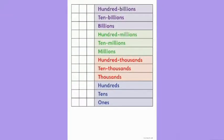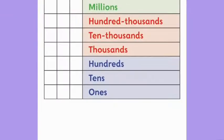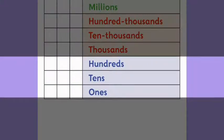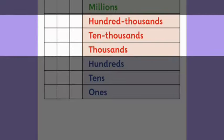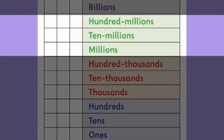It can also help for children to see that the values of the different digits in a number come in groups of 3. The 3 digits at the far right of a number always have a value in the hundreds or less — they are single units, tens, or hundreds. The next 3 digits always have a value in the thousands: single thousands, 10 thousands, or 100 thousands. And the next 3 numbers are always in the millions: single millions, 10 millions, or 100 millions.